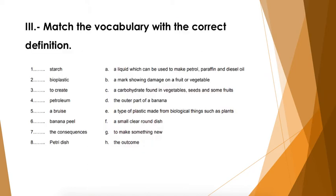For exercise number three, we need to match the vocabulary on the left with the probable definition on the right. For example, the first one says 'starch' — which one do you think it's going to be matched with? All these words come from the reading, so you can go back, check which one matches, and join them.